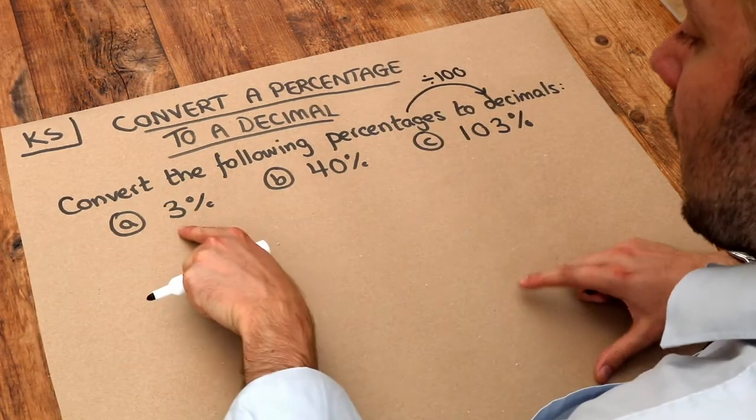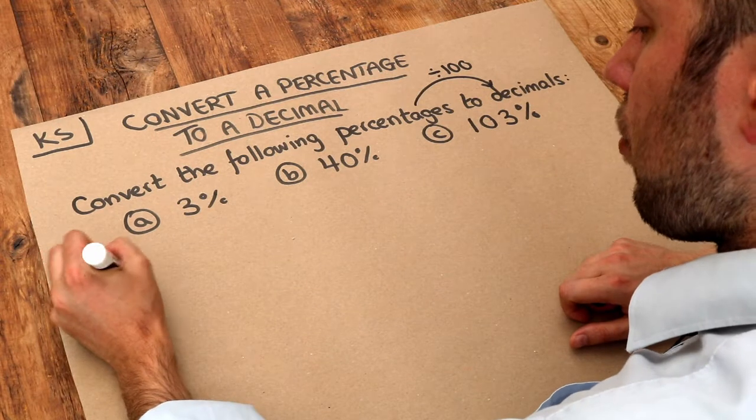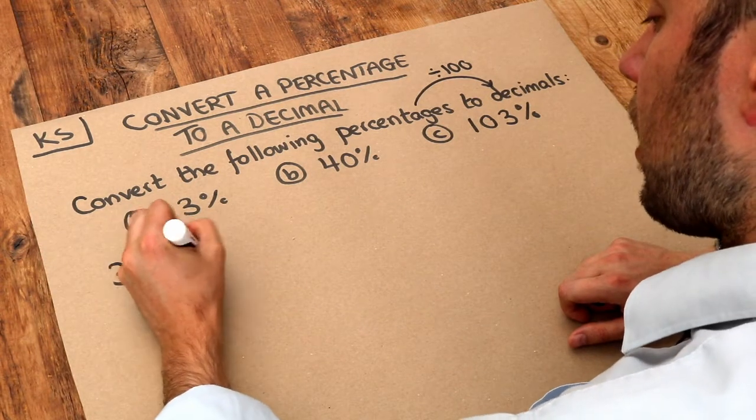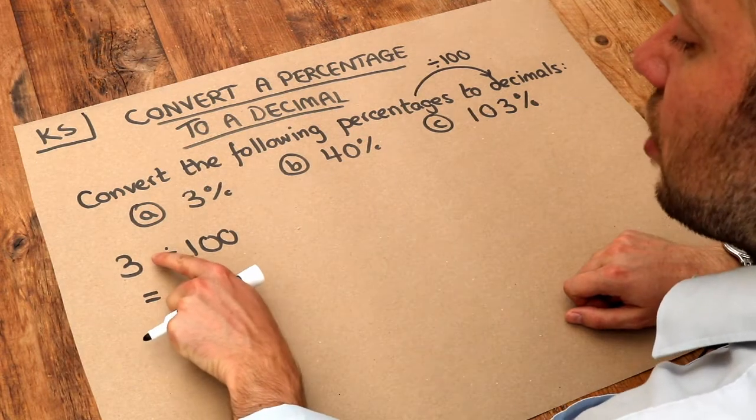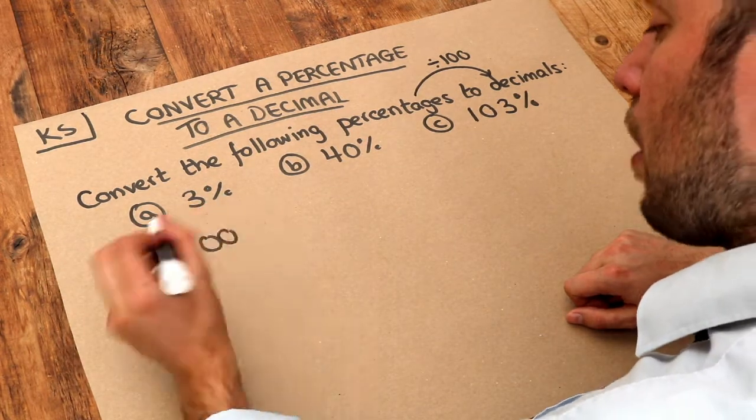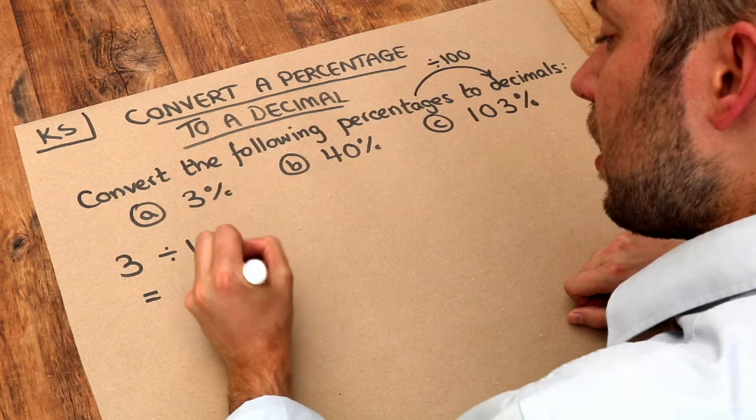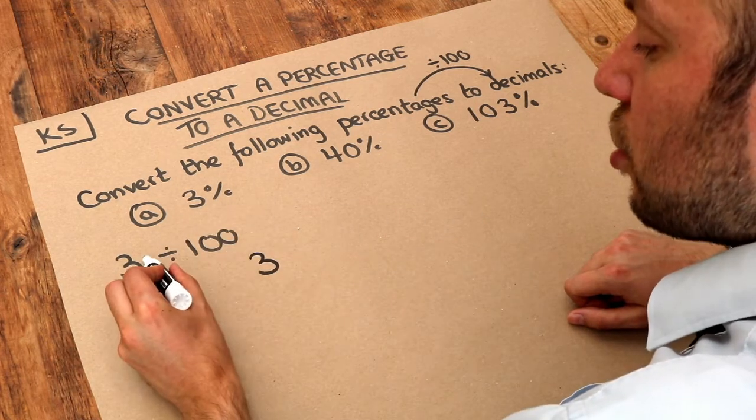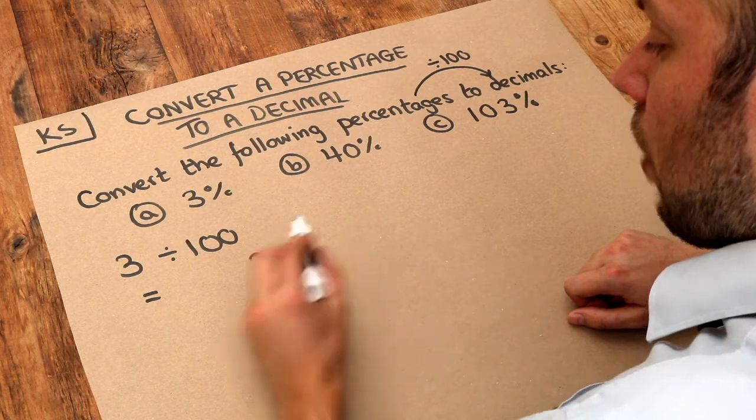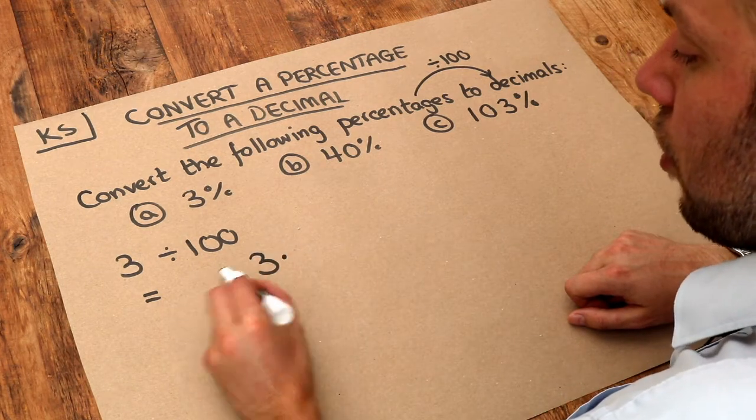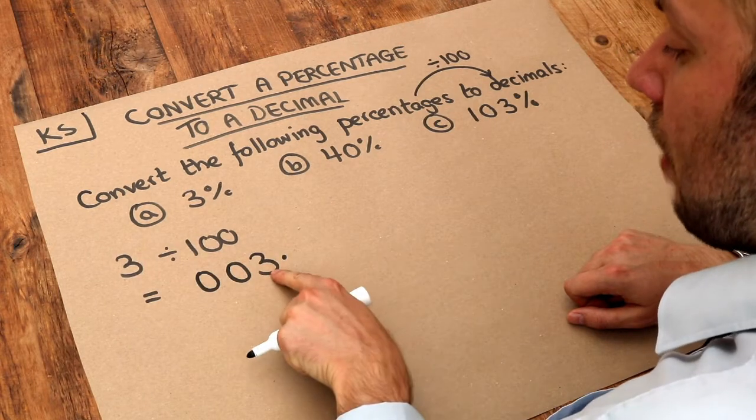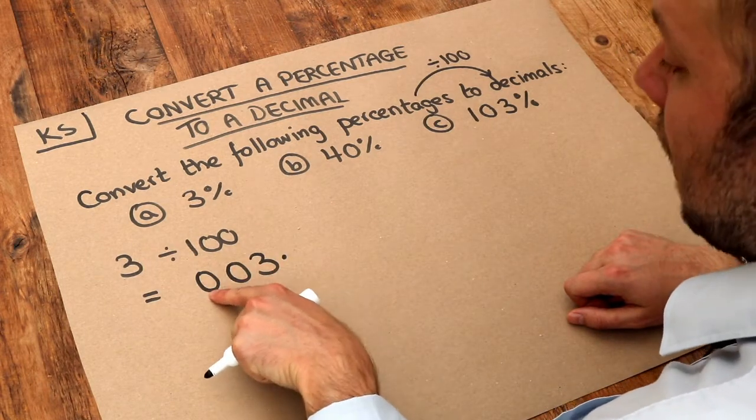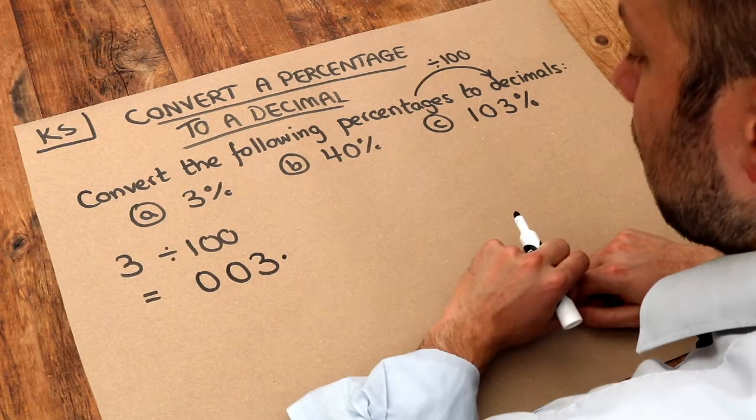So if we had 3%, we want to do 3 divided by 100. Now to divide by 100, you move the decimal point two places to the left. At the moment we don't have a decimal point, but we know that it occurs just after the units digit. Now I can't really move it left at the moment because I've got no digits on the front, but we might as well just put zeros because we have three units, we have zero tens, we have zero hundreds. There's nothing wrong with putting zeros on the front.